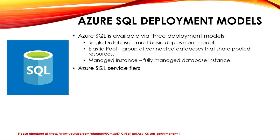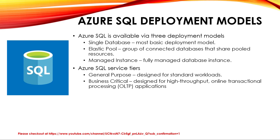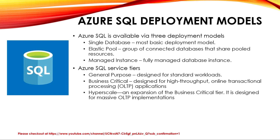These deployments come in various service tiers. There are three service tiers: general purpose, designed for standard workloads and the default tier; business critical, designed for high-throughput OLTP applications offering high resiliency and low-latency performance; and hyperscale, an expansion of the business critical tier designed for massive OLTP implementations, enabling auto-scaling of compute and storage.